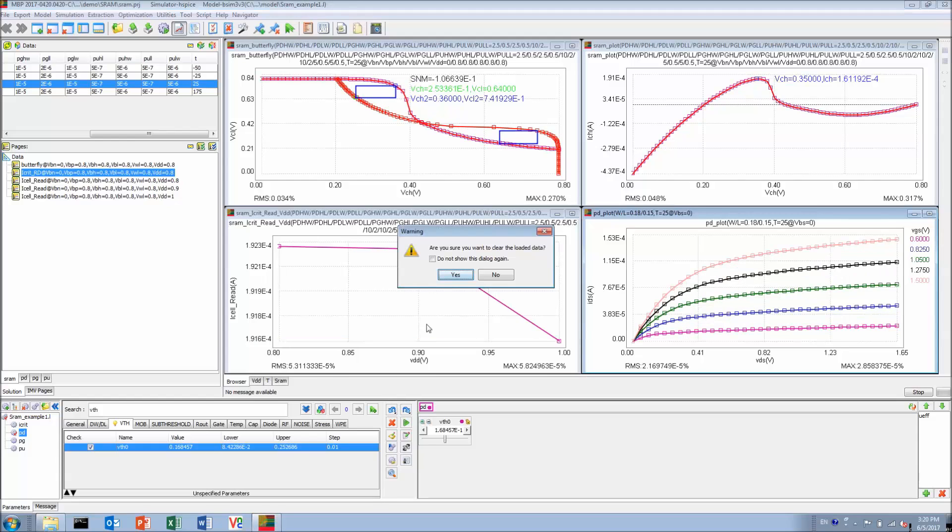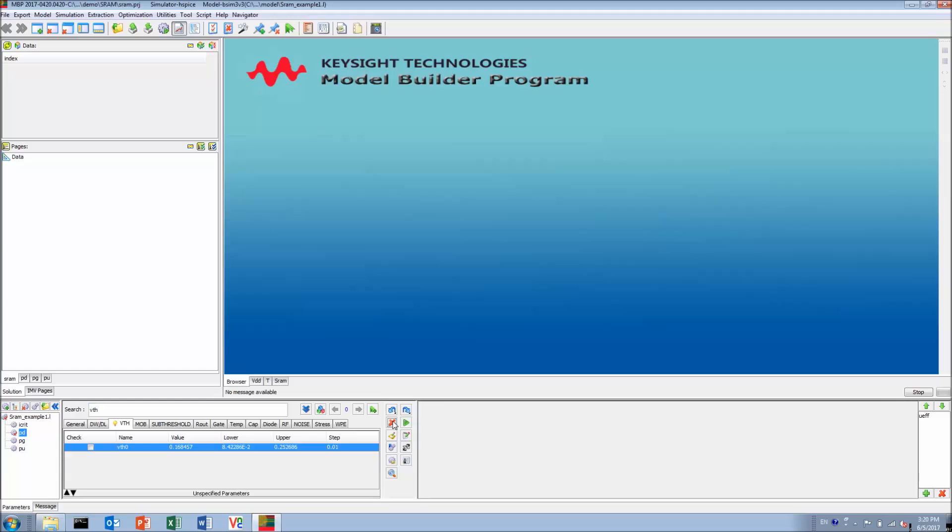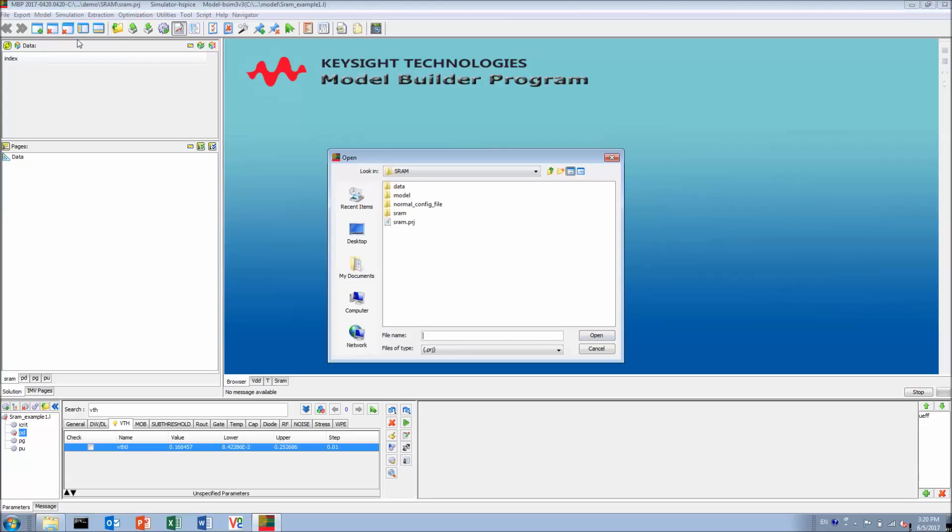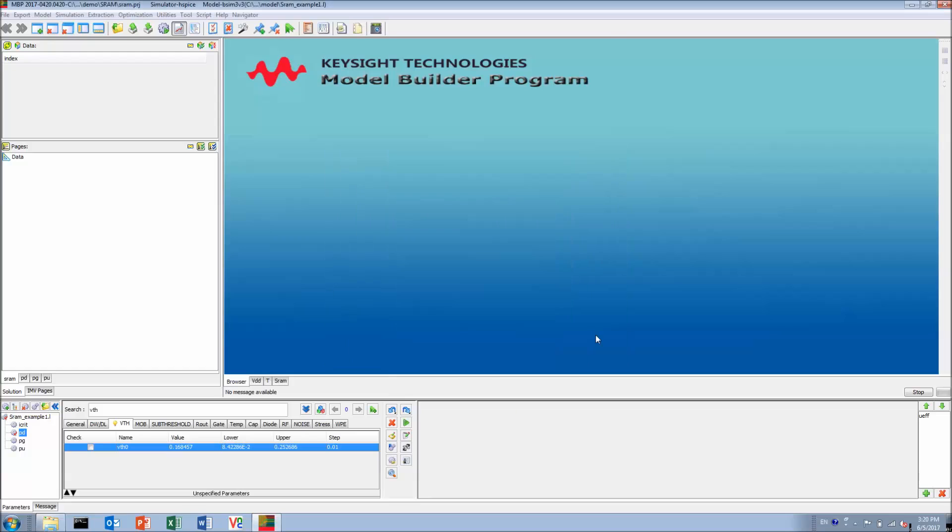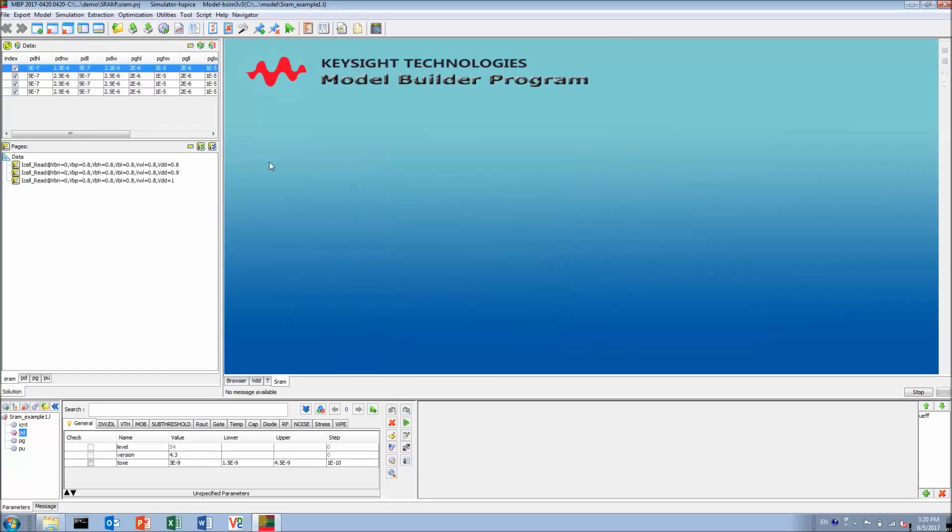Now let's start over and see how we can get those graphs. Please go to the menu, file, project, open. Pick up the sram.prg file from the example folder. The project file contains the SRAM sub-circuit model, measurement data, and definitions for static noise margin. Come to the SRAM tab.